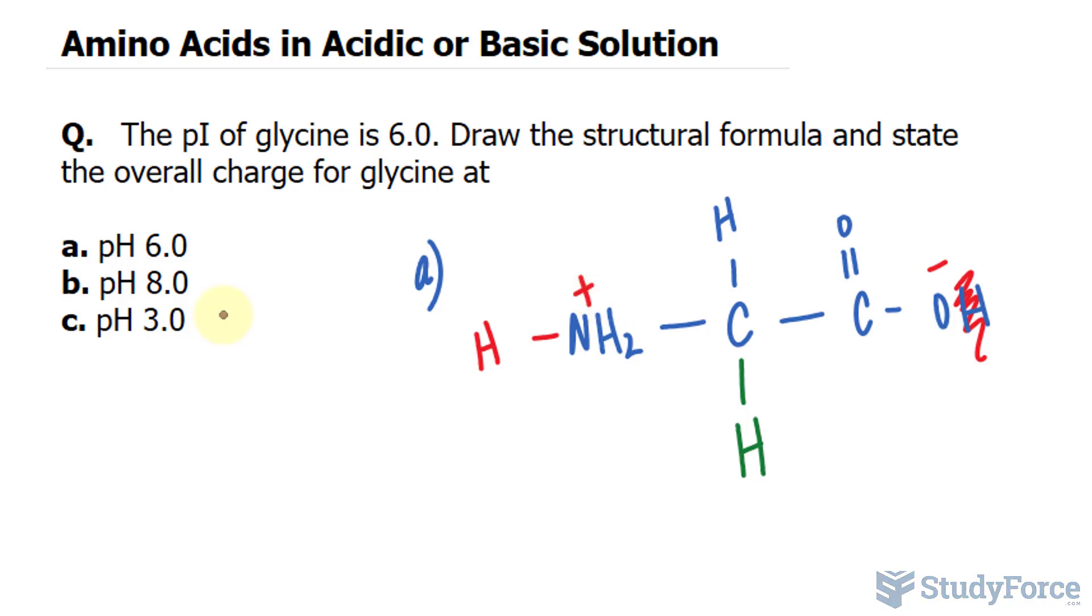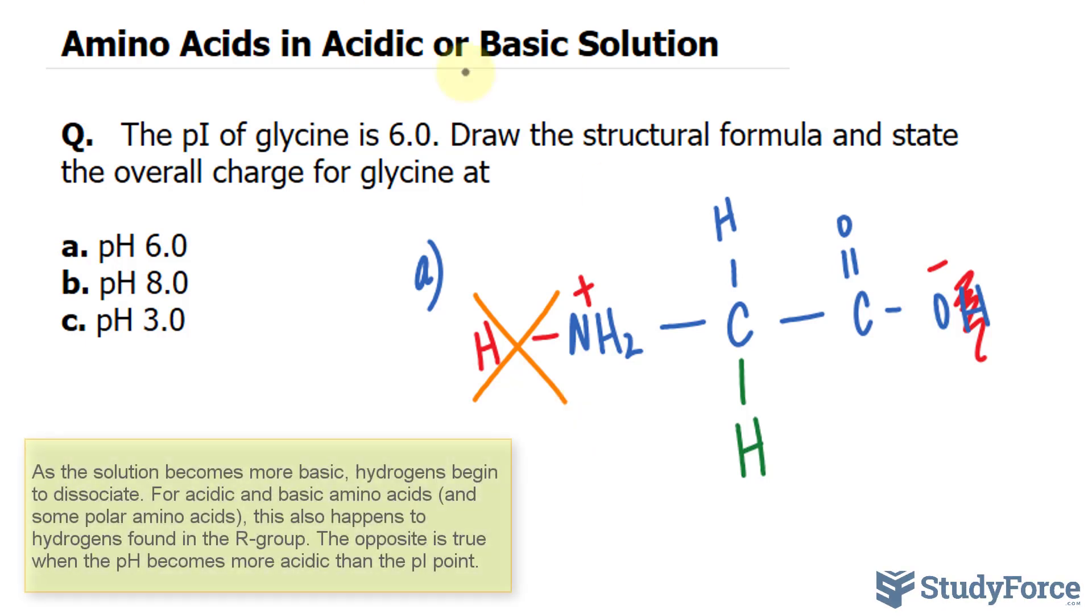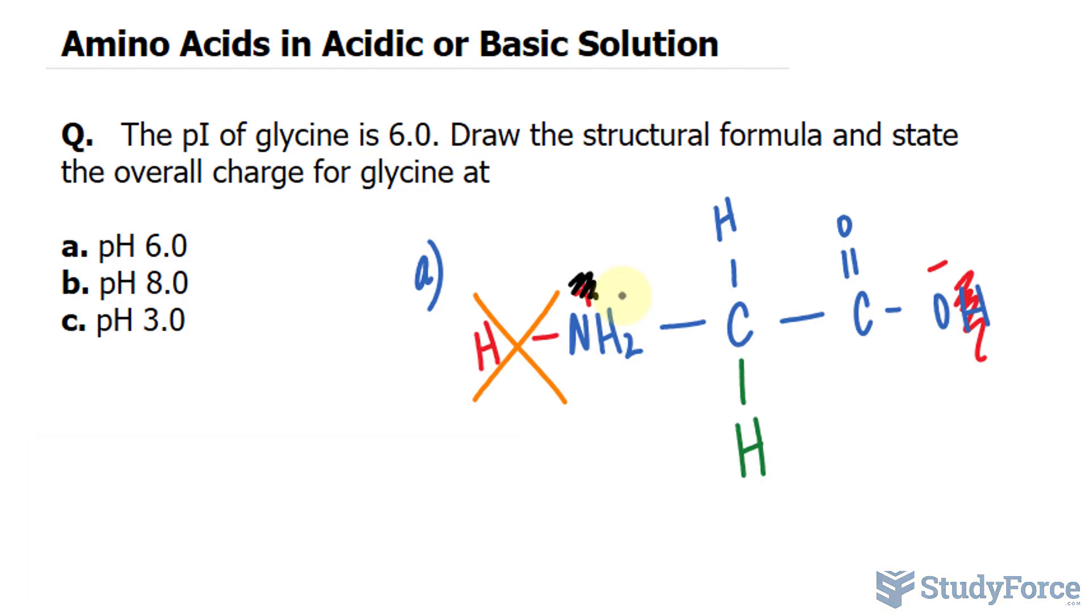At a pH of 8, it's becoming more basic. When this happens, the ammonium group, this part right here, loses its hydrogen to become NH2 again. So this hydrogen will dissociate from the left side. It will lose its charge. And because the carboxylate group remains ionized, the overall charge of glycine at pH 8 is negative 1. So expect the charge here to be negative 1. The overall charge for A is 0.